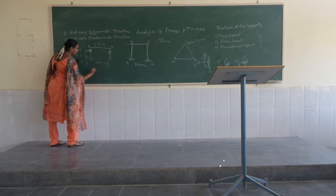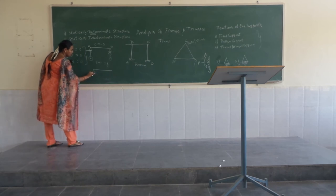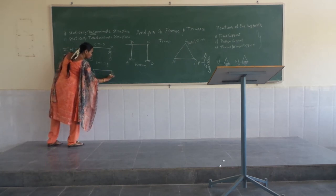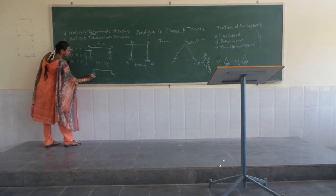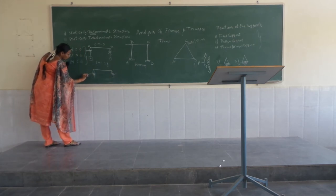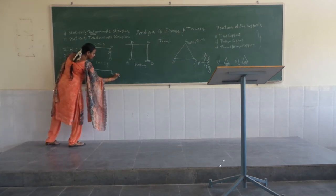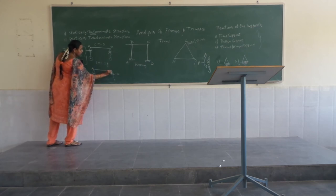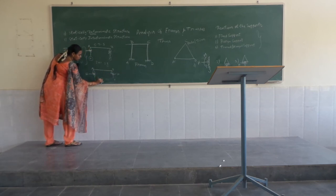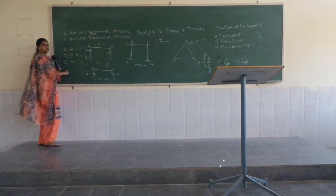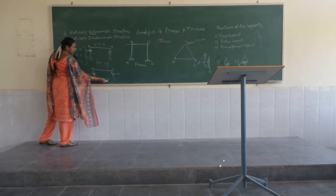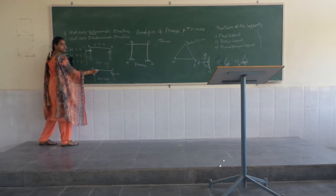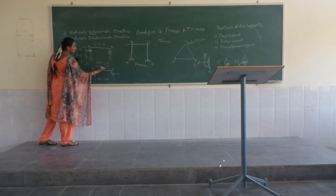The second example: a beam hinged at one support and also hinged at the other support. A hinged support has two unknowns — horizontal and vertical. So at point A there are two unknowns and at point B there are two unknowns, giving 2 plus 2 equals 4 total unknowns. We have only three equilibrium equations, but the unknown forces are 4, so we cannot analyze the beam using these three equations alone. Therefore, this beam is called a statically indeterminate structure.